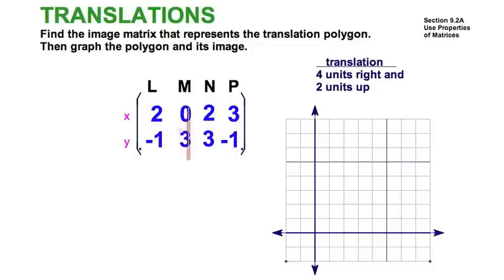So let's plot those: two, negative one. And that would go right there. Zero, three, on the y axis as we'd expect. Two, three, over here. Three, negative one. And if we just finish the polygon, we can see that we've got a quadrilateral.